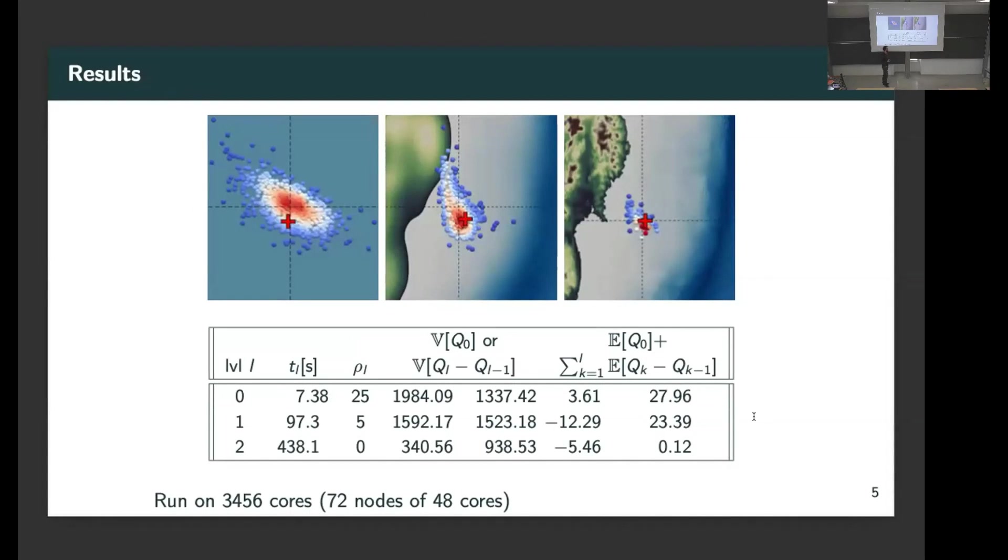All the way to going through a linear bathymetry for our coarsest model, which I call the tsunami in a bathtub, which is obviously very wrong, but because it's extremely fast, we can exploit multilevel here. The results that we get from the multilevel Markov chain Monte Carlo application are really nice.